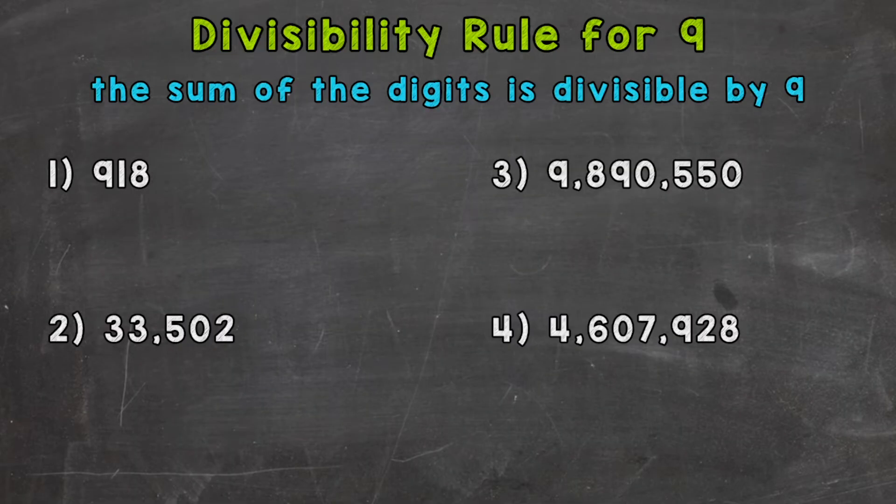Now remember, when we're checking for divisibility, we're checking to see if we can divide without getting a remainder so the given numbers work out exactly. In the case of this video, we're going to go through four examples here and see if they are divisible by 9 based on the rule at the top of the screen.